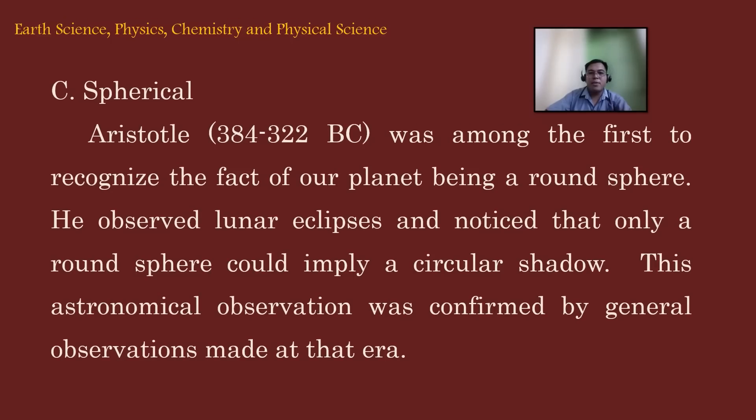The correct answer for this item is letter C. Spherical. Now, Aristotle in 384 to 322 BC was among the first to recognize the fact that our planet is being a round sphere. He observed lunar eclipses and noticed that only the round sphere could imply a circular shadow. This atmospheric observation was confirmed by general observations made at that era.